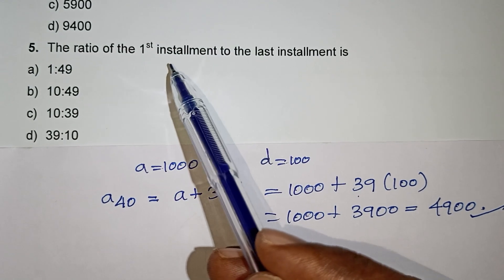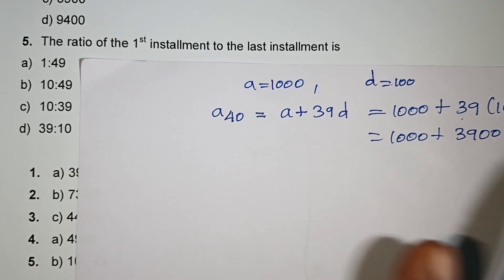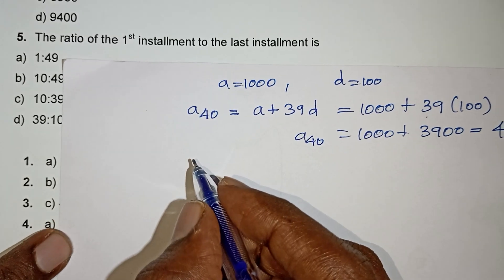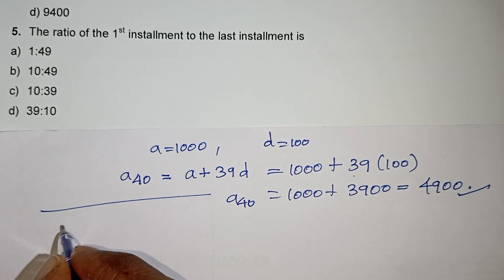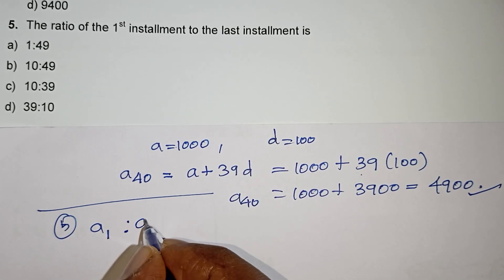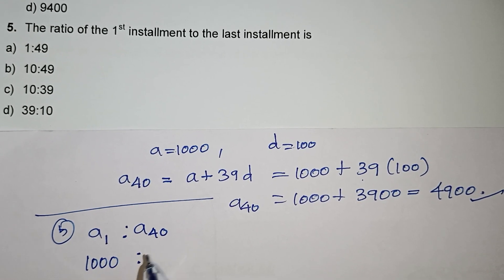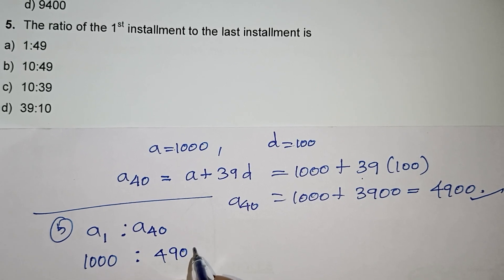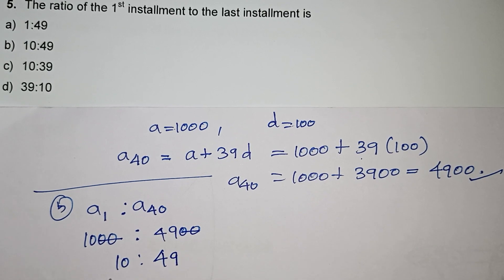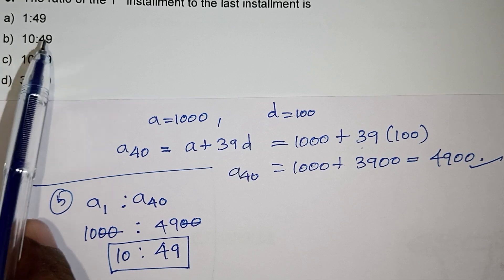The ratio of the first installment to the last installment — the first installment is A = 1000, and the last (40th) installment is A40 = 4900. The ratio is 1000 : 4900. Cancelling two zeros from both, we get 10 : 49. There is no other common factor, so 10 : 49 is the answer, that is option B.